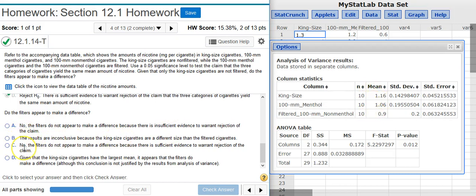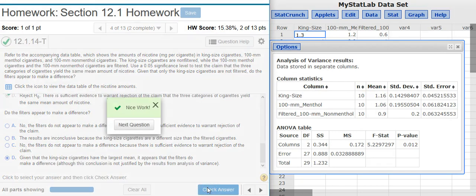So answer options A and C, we are not going to select. Answer option B, the results are inconclusive. Well, I don't think the results are completely inconclusive. So that leaves us with answer option D. Given that the king size cigarettes have the largest mean, and here we see that they do, it appears that the filters do make a difference, although this conclusion is not justified by the results from analysis of variance. That's very true. You're going to need to do some other statistical analysis to justify it. But just based on what we see here, the two filtered varieties do have a slightly lower mean value than the non-filtered king size cigarettes. And so we're going to select answer option D. Nice work!